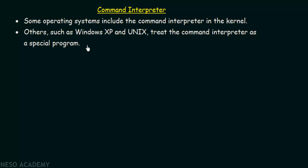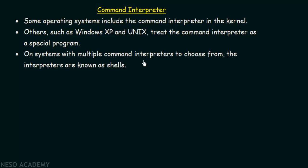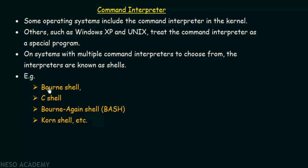In Windows you have the command prompt, also known as CMD. In Linux you have a program known as the terminal which allows you to interact with the CLI. On some systems with multiple command interpreters to choose from, the interpreters are known as shells — for example the Bourne shell, the C shell, or the Bourne Again Shell also known as BASH, and the Korn shell.